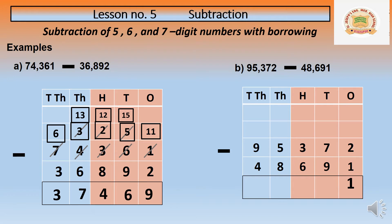Now move to the tens place. Tens place digits are 7 and 9. Can you minus 7 from 9? No. So we use the regrouping method — we borrow from the hundreds number. Cancel the 3 hundred, make it 2 hundred, and that 1 hundred added to the tens place becomes 170. In simple words: 17 minus 9 equals 8.